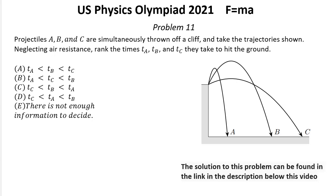Problem number 11. Projectiles A, B, and C are simultaneously thrown off a cliff and take the trajectories shown, neglecting air resistance around the times Ta, Tb, and Tc they take to hit the ground.